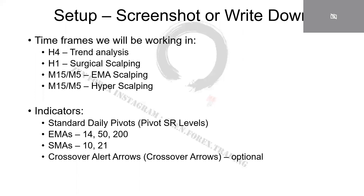One other thing I use is a crossover alert arrow indicator — it basically just dings every time I have a specific EMA cross. So I don't have to sit and watch the computer all the time. If I hear a ding, I know I need to start watching that pair and then look for the setup that is going to lead me into an entry.